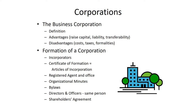The certificate of formation is a fairly straightforward and simple document — you can find it on the Secretary of State's website and fill out the format on your own if you choose. But understand that filling out the certificate of formation by itself probably is not sufficient to give you the limited liability you're looking for. The registered agent is an individual or a business with an office or address in Texas who is authorized to receive official mail, official notices, and service of process for the corporation.